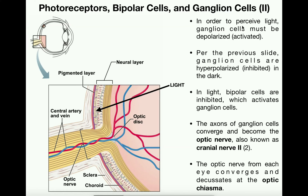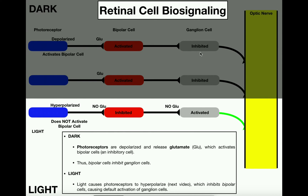In order to perceive light, ganglion cells must be activated — they have to be depolarized. But in the dark, ganglion cells are hyperpolarized or inhibited. In the dark, photoreceptor cells are depolarized, which seems backwards, but that's how it is. Being depolarized or activated, the photoreceptor cells activate the bipolar cells, which are by nature inhibitory. If you activate an inhibitory cell, they will inhibit the next cell, which is the ganglion cell. That's why in the dark, you don't perceive any light — these ganglion cells are inhibited.